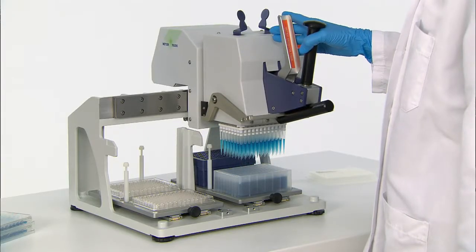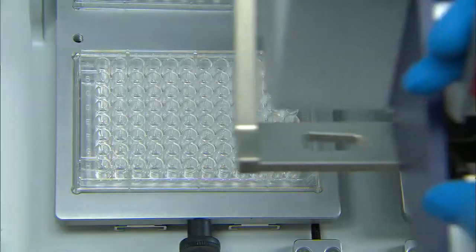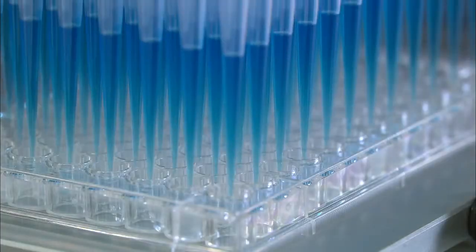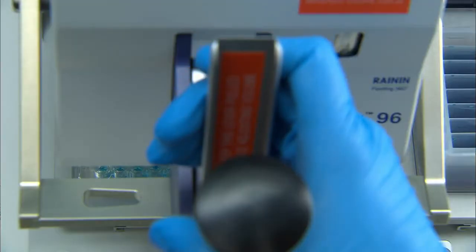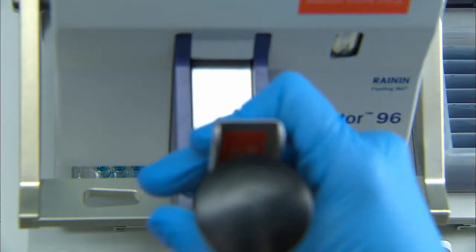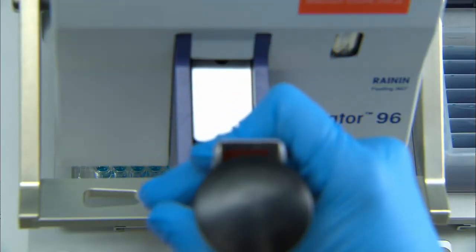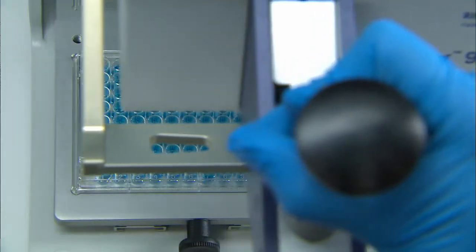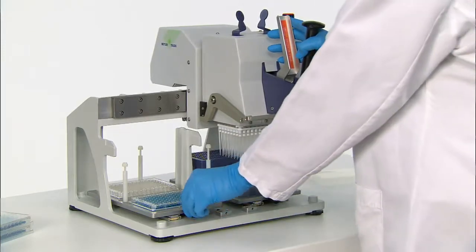When the liquid is aspirated, slide the liquid head to the left over the 96-well plate and push it down. Gently squeeze the lever again to dispense the liquid into the 96-well plate. Squeeze the lever one more time for the blowout step.